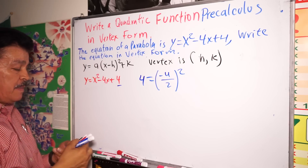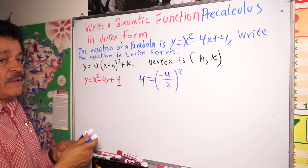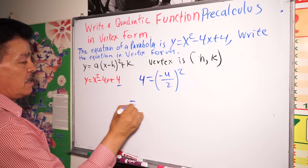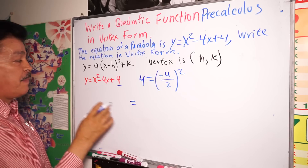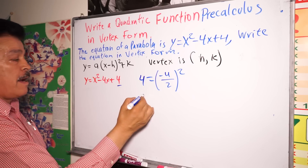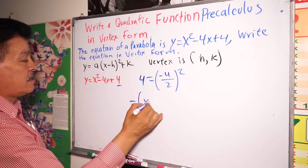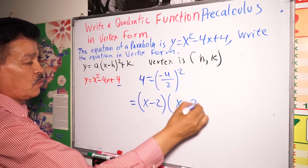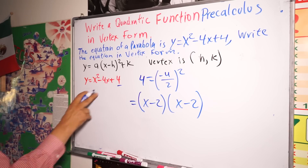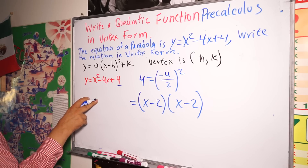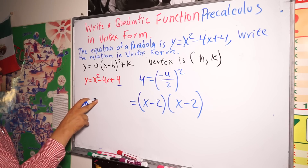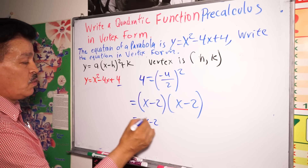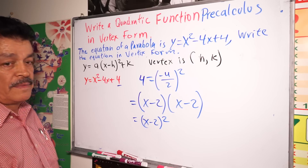Next step: it's going to be equals (x minus 2) times (x minus 2). This equals (x minus 2) to the second power.